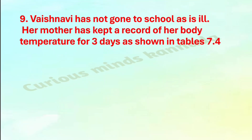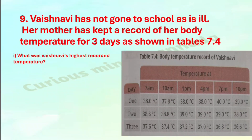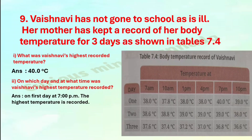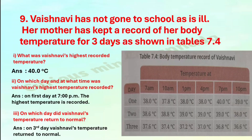Ninth question: Vaishnavi has not gone to school as she is ill. Her mother kept a record of her body temperature for three days as shown in table 7.4. First: What was Vaishnavi's highest recorded temperature? Answer: 40 degree Celsius. Second: On which day and at what time? Answer: On the first day at 7 PM. Third: On which day did her temperature return to normal? Answer: On the third day.